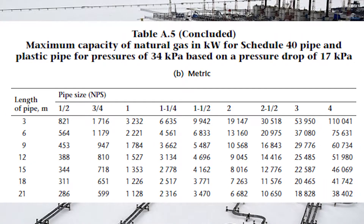Much like the low pressure gas line sizing tables, there is a metric equivalent, and that will be the table called concluded — in this case, Table A5 concluded. It covers maximum capacity of natural gas in kilowatts for SCH 40 pipe and plastic pipe for pressures of 34 kPa based on a pressure drop of 17 kPa. Note that the length of pipe is in meters, the nominal pipe size is still in inches, and all the values in the table are in kilowatts.